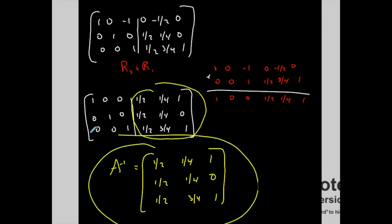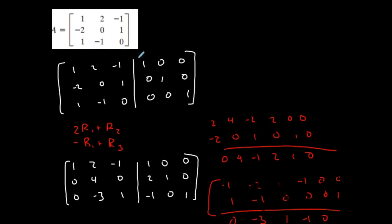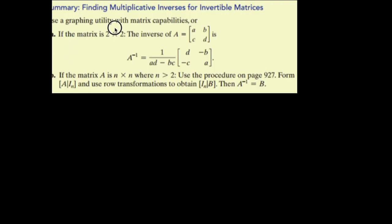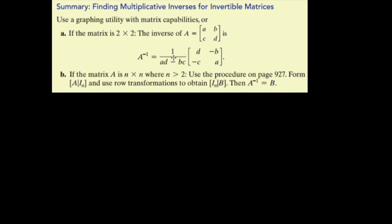So once again: if you have a square matrix larger than 2x2, you start by putting your matrix on the left and the identity matrix next to it on the right. Do row operations to create the identity matrix on the left. Once you've done that, the new right-hand side is your inverse. If it's a 2x2 you have a nice formula, but if it's bigger than that you use this row-reduction procedure. Start with [A|I], apply row operations to get [I|A inverse].